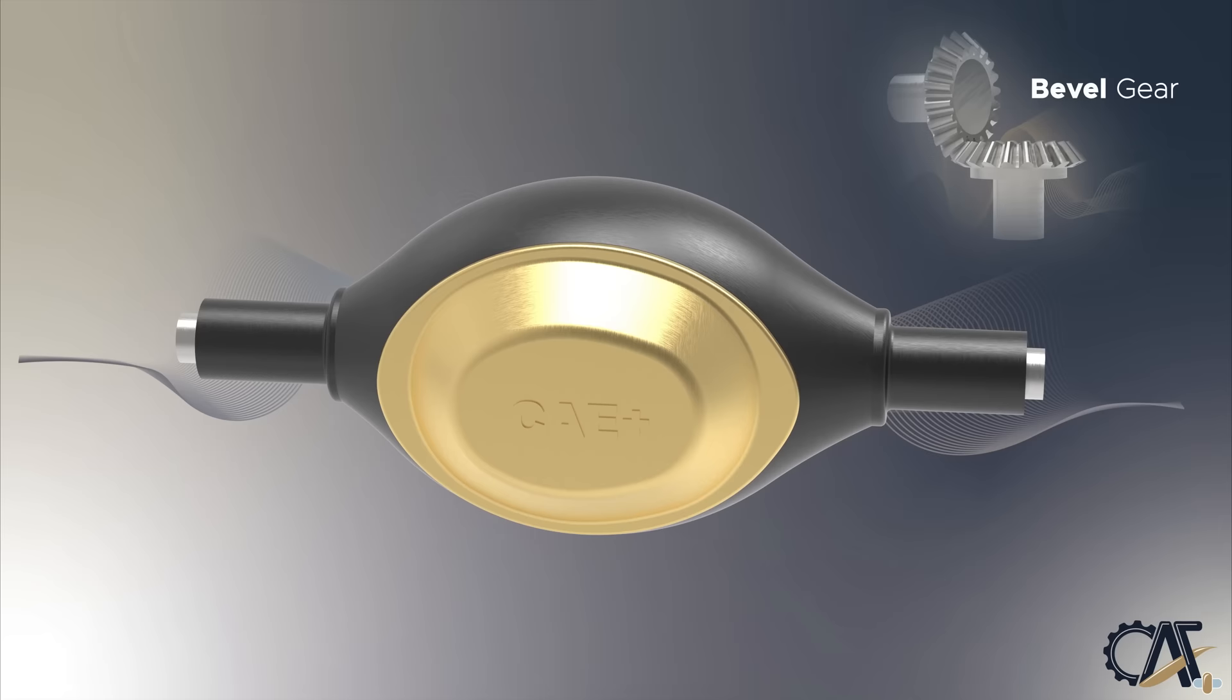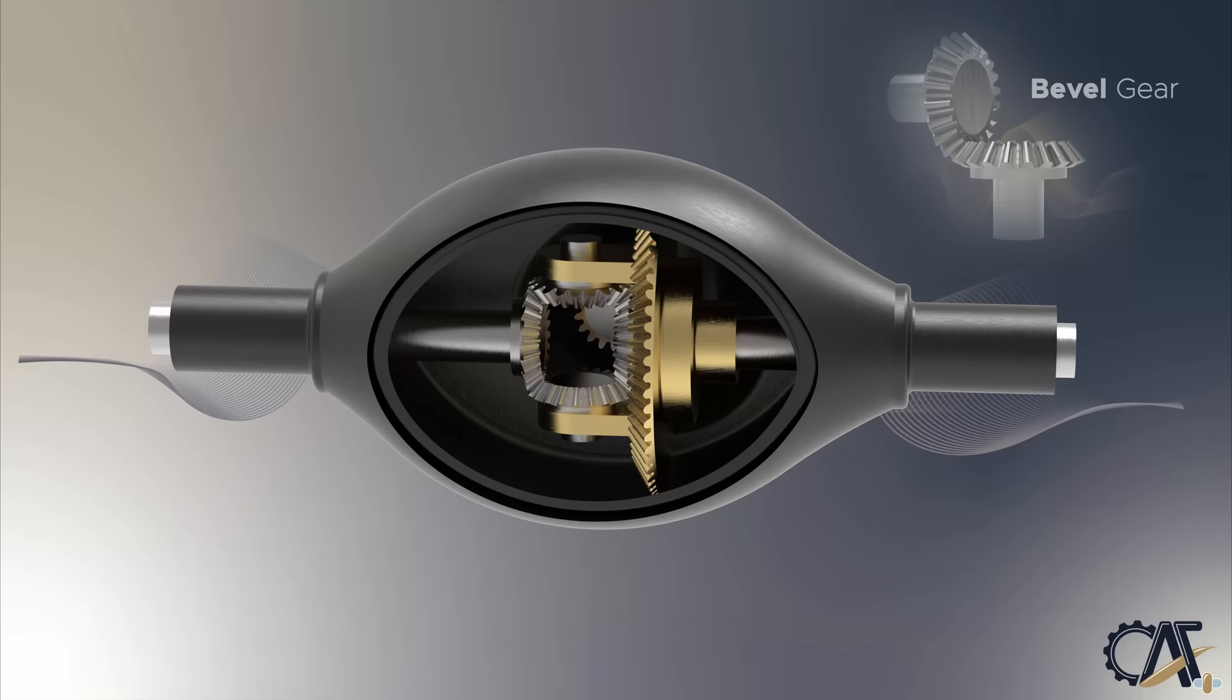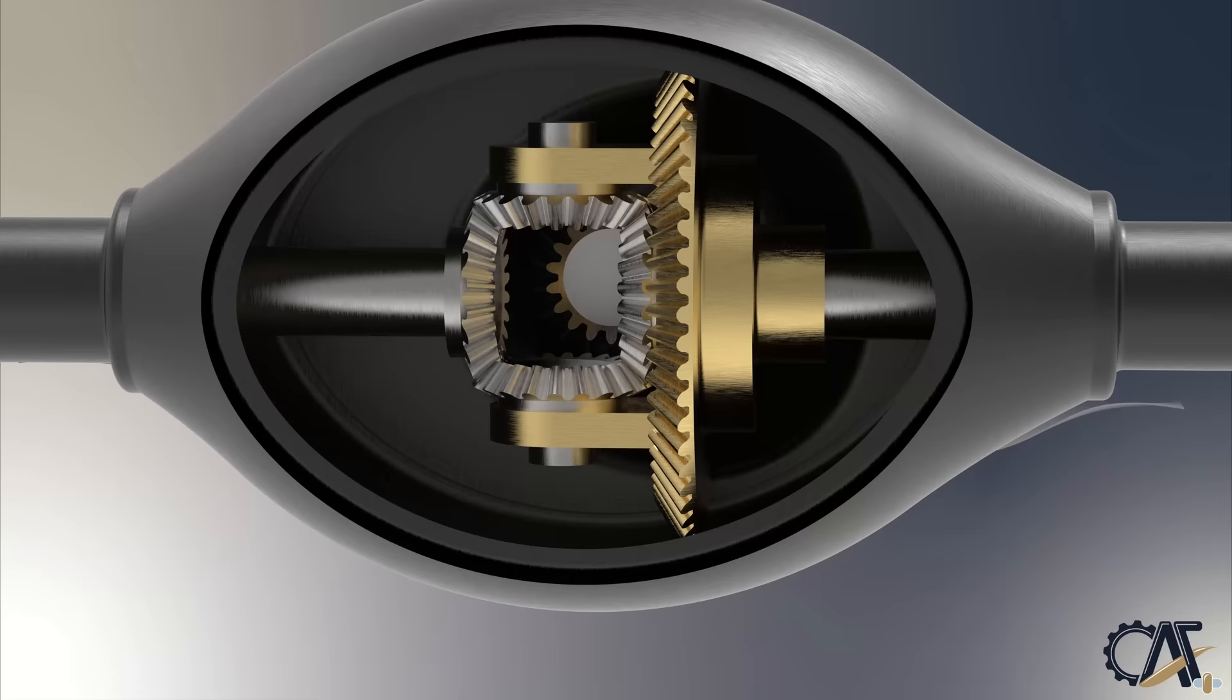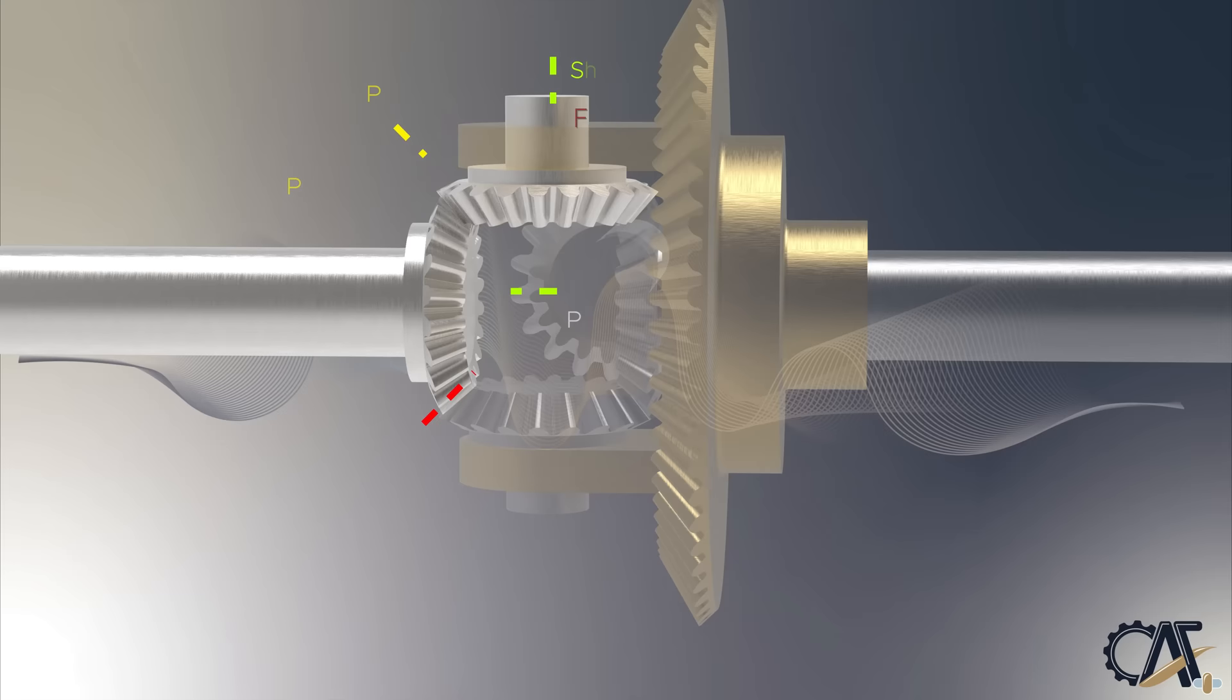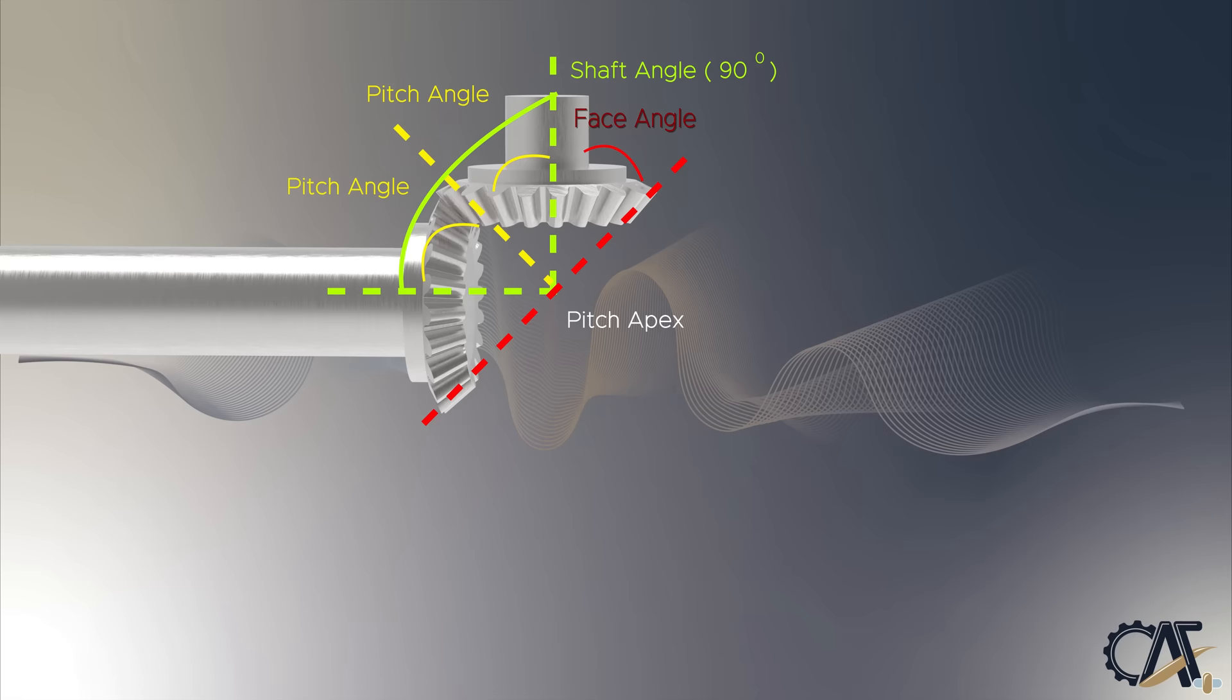In the next example, we will show the application of bevel gears inside a differential of a vehicle. Simply, a differential is a system that transmits engine torque to the wheels. It takes the power from the engine and splits it, allowing the wheels to spin at different speeds. The engine to wheel connection configuration requires the differential to transmit the torque with a 90 degree angle as shown in the animation. For this reason, bevel gears are a perfect fit to be used in a differential.